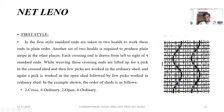Here the crossing end processes nearby four ends over four ends. While weaving, these crossing ends are lifted up for a pick in the cross shed, and then a few picks are worked in the ordinary set, and again a pick is worked in the open set, followed by a few picks worked in the ordinary set. The ordinary set is formed in the plain weave for the plain weave viewer.